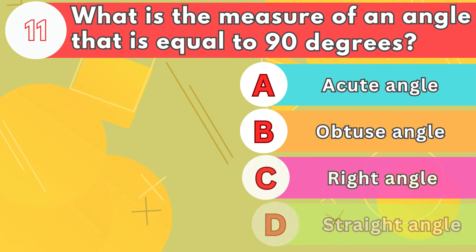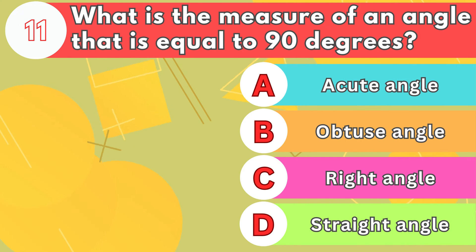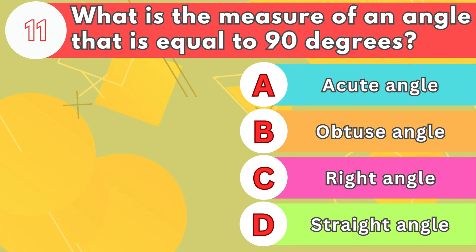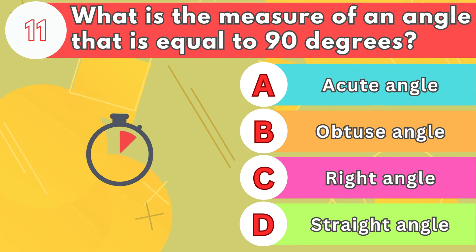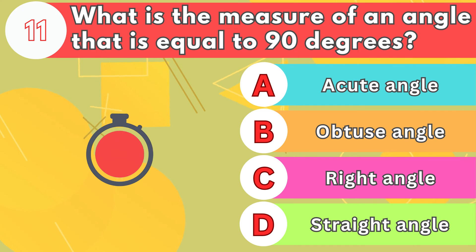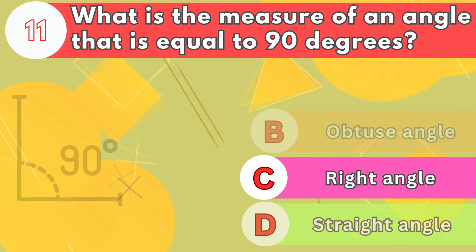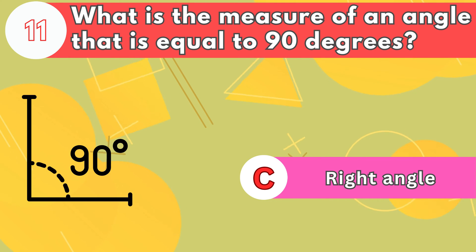Number 11. What is the measure of an angle that is equal to 90 degrees? The answer is letter C, right angle.